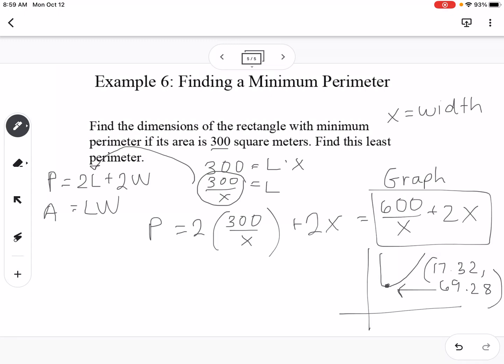So we're trying to find the width. We want the dimensions of the rectangle that would make the perimeter a minimum. So this is our x value that we found, the 17.32, and then we want to find what the length would be. So we know that the area equals length times width. So 300 equals 17.32 times our length, so we can divide both sides by 17.32, and we get actually 17.32.